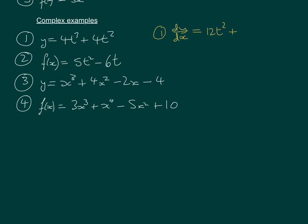And then for the second one, we've got to do 2 times 4, which is 8t. Take 1 from the power, which would be 1. I'm not going to write that in. So that's the function, 12t squared plus 8t.